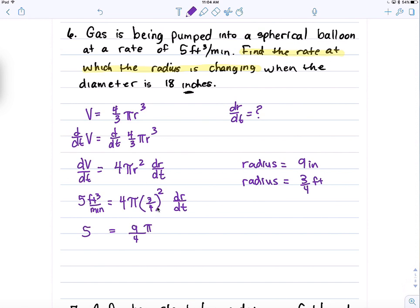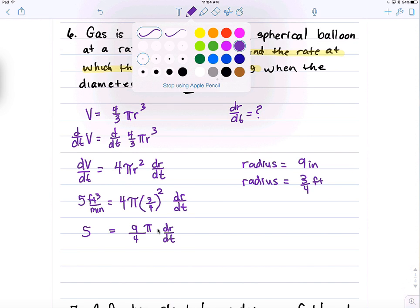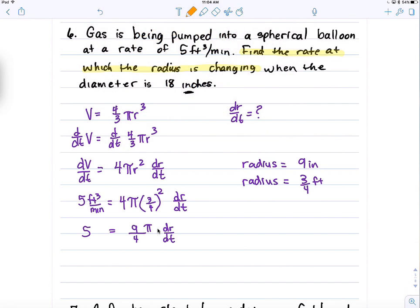How could we solve for dr/dt? Multiply both sides by what? By the reciprocal. So, multiply this by 4 over 9π. 4 over 9π. And we would just simplify and get 20 over 9π. Is equal to, this cancels this, dr/dt. So, the rate at which the radius is changing.